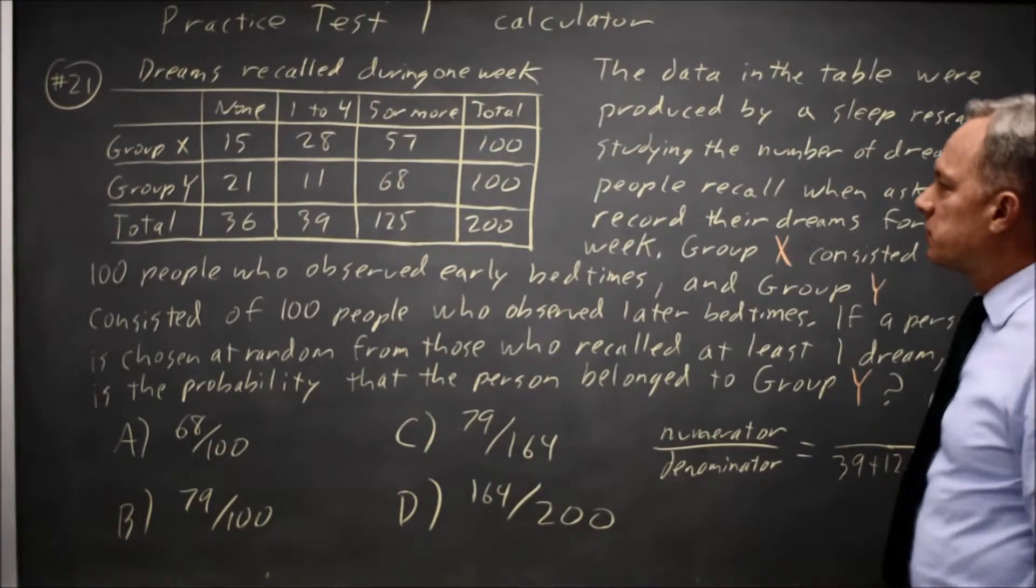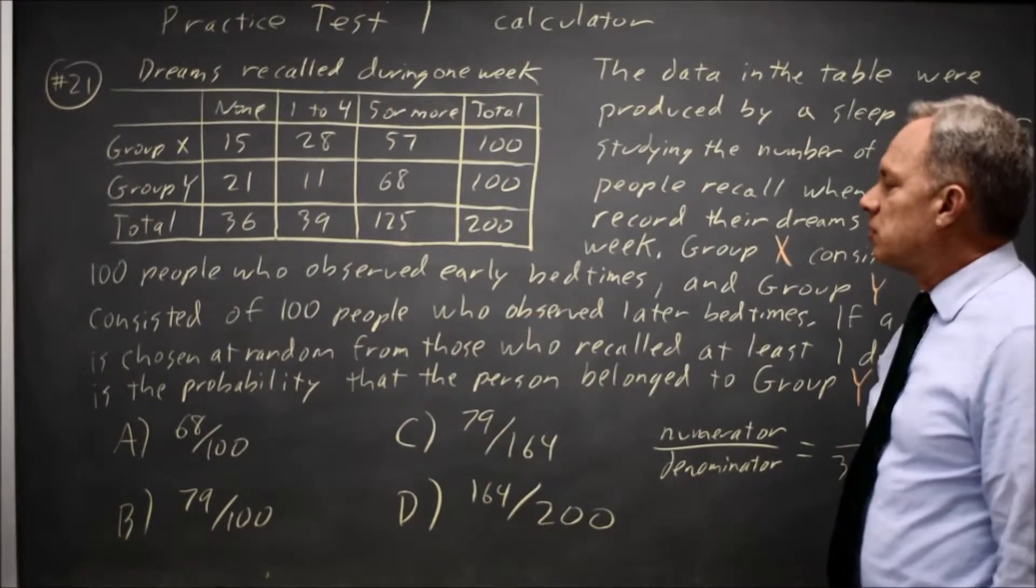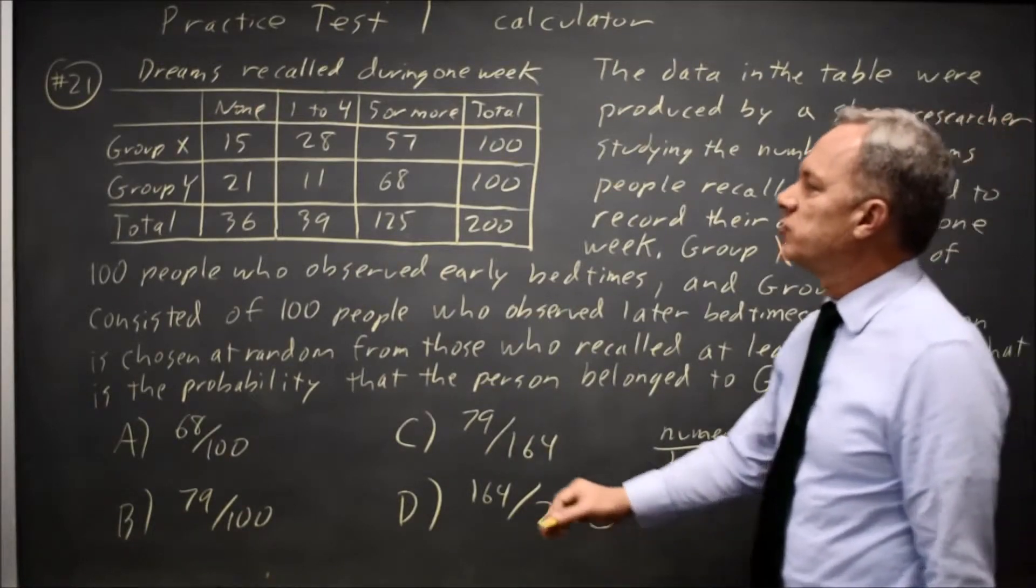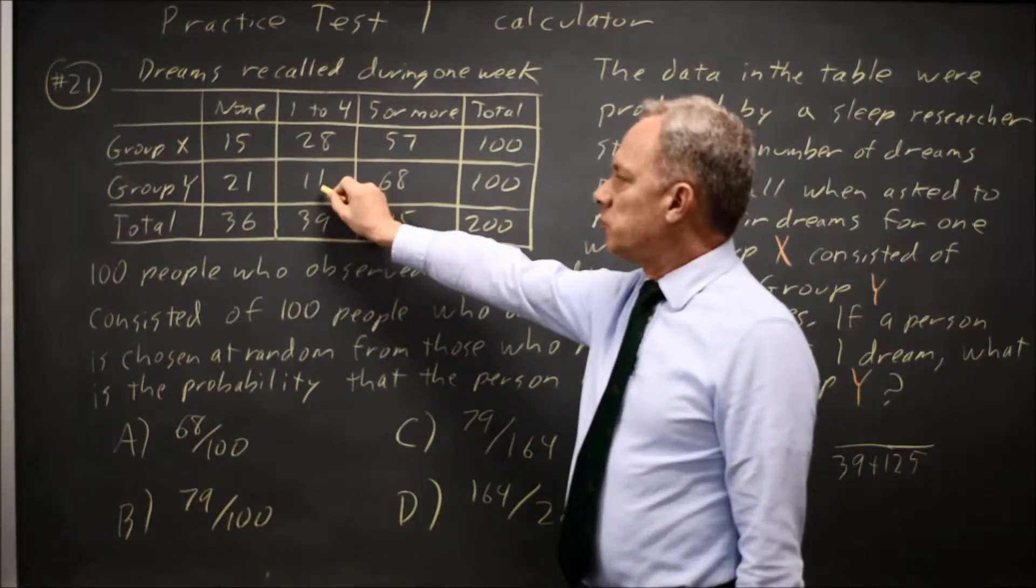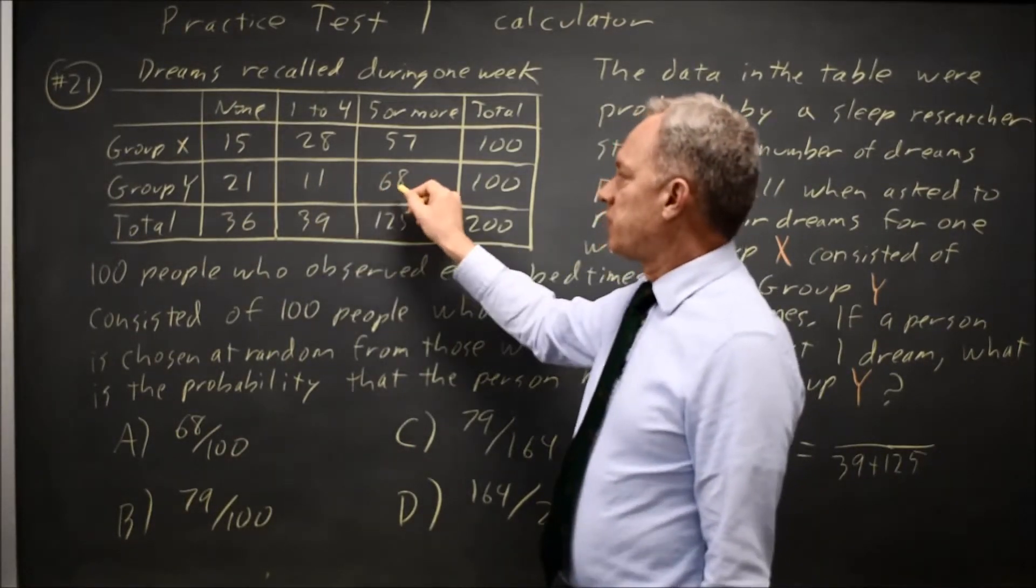Your numerator is, of those in the denominator only, which ones meet the description they're asking for. Of those with at least one dream, which ones are Group Y? That would be 11 plus 68.